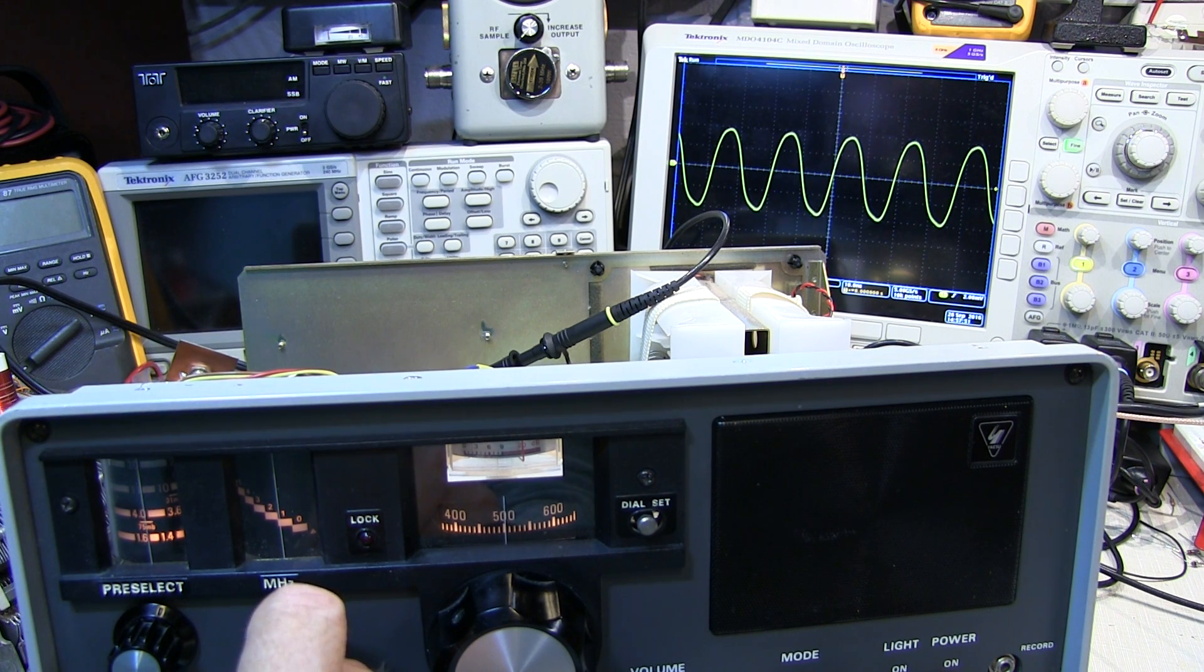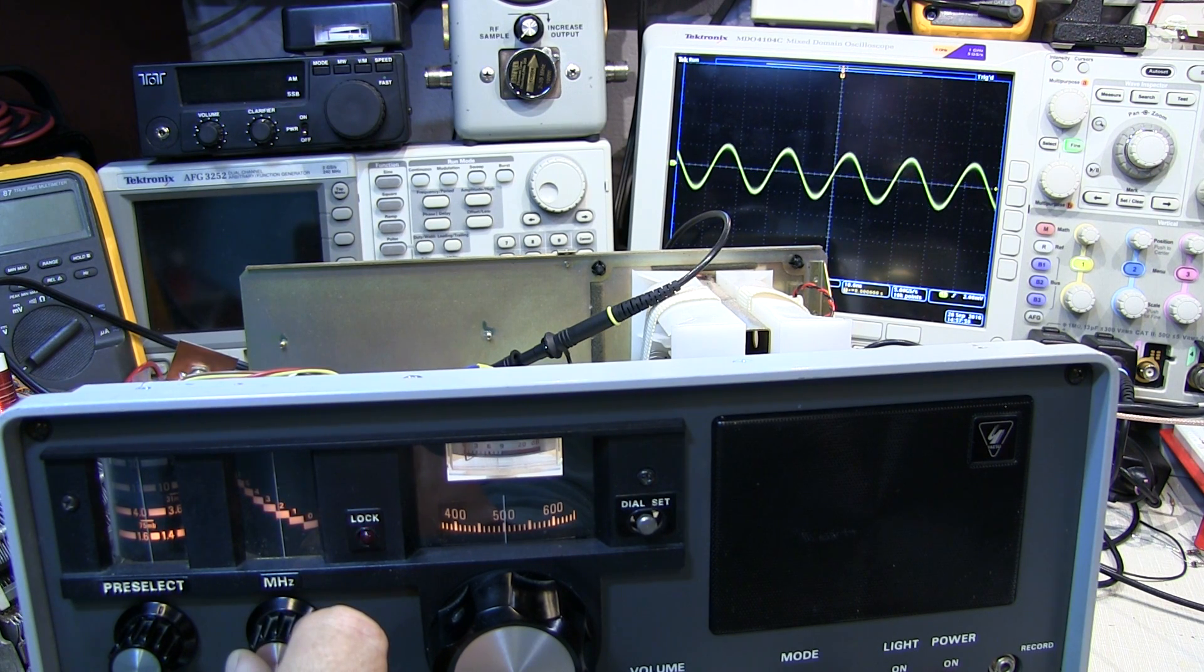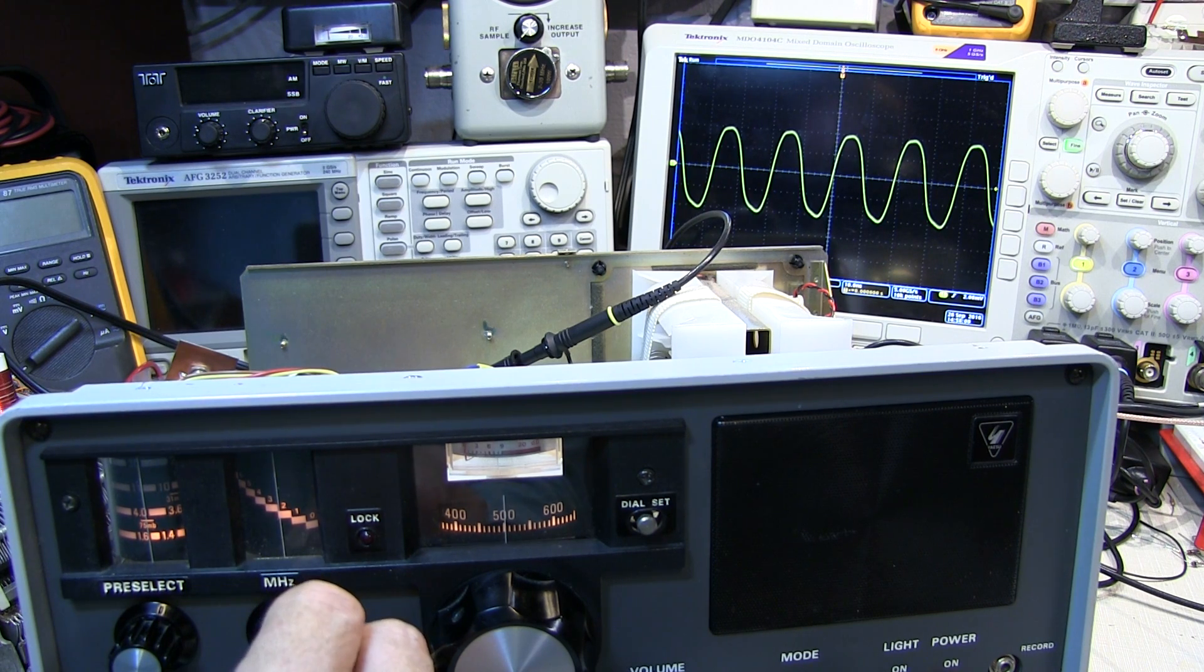So the scope is showing the signal out of that bandpass filter. So if we adjust our MHz dial here, which is our first VFO, we can see as I tune it up, that signal goes away. And if I keep tuning it up in frequency, we get a signal that comes back there again.